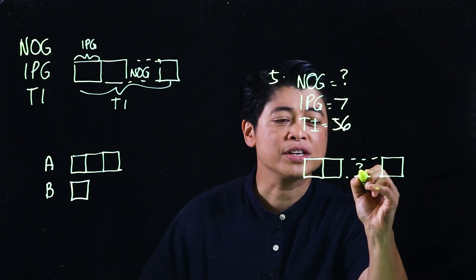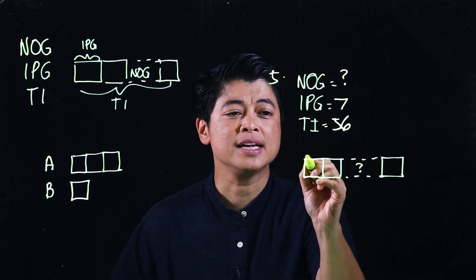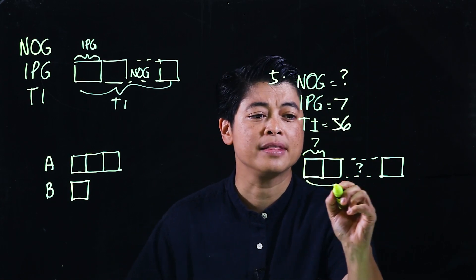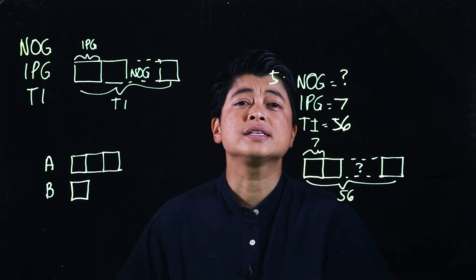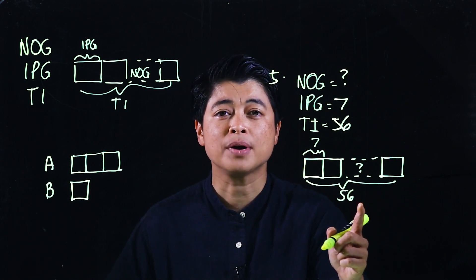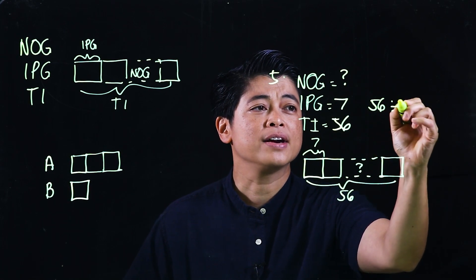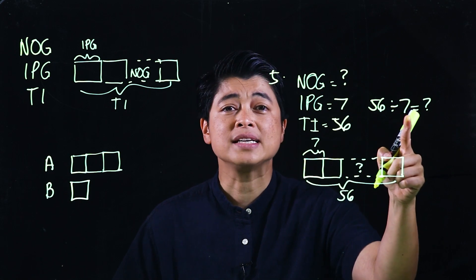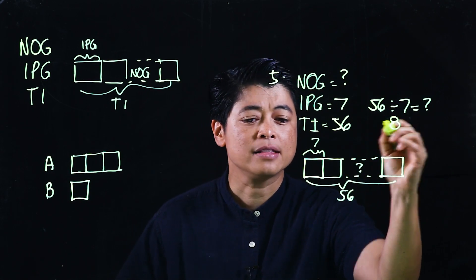Each section is seven (items per group) and the total is 56. Since the total item is given, it's a division problem: 56 divided by 7 equals question mark. Counting by sevens to reach 56 gives eight — so he used eight boxes.